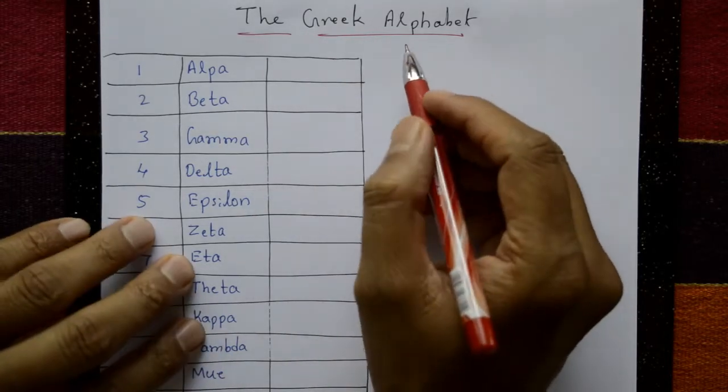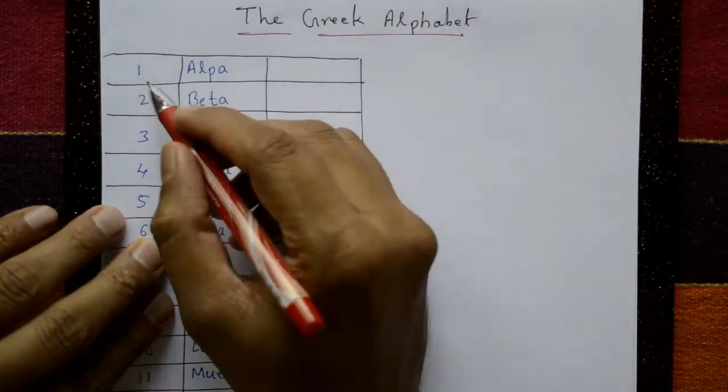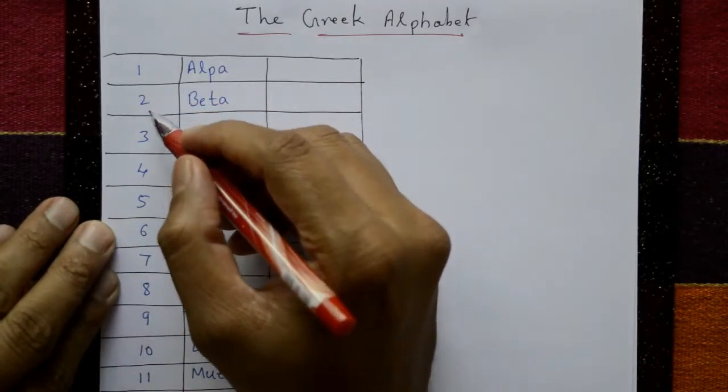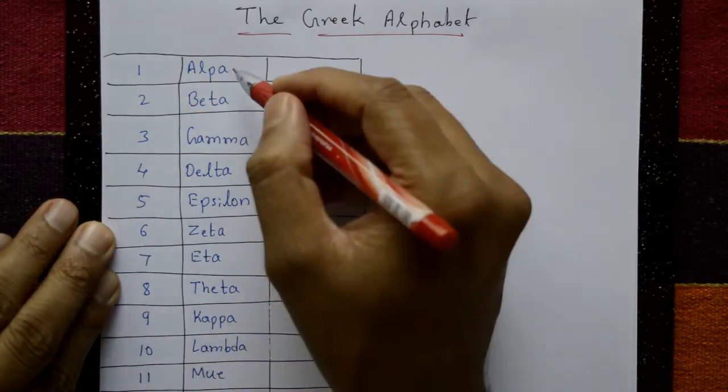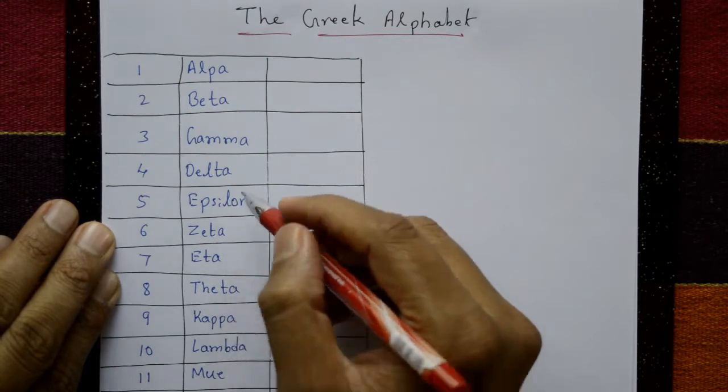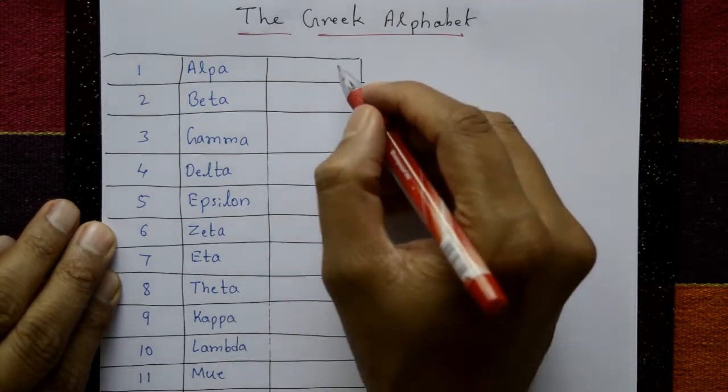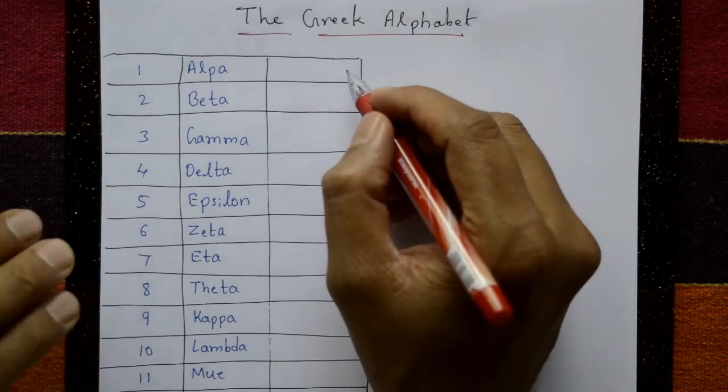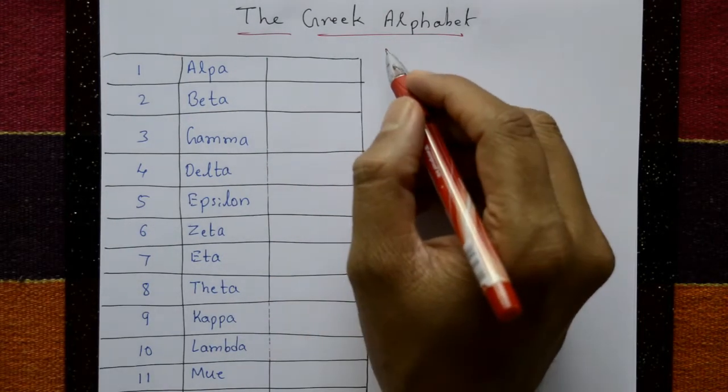The Greek alphabet — you know these symbols, these are the Greek alphabet. We'll cover the number of series and the names.